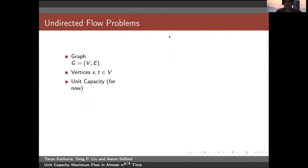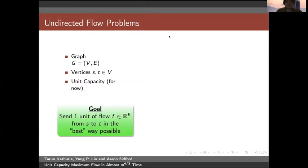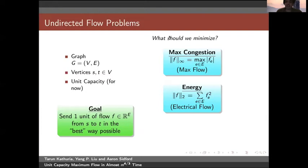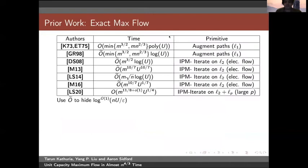To start, we consider undirected flow problems and assume unit capacity, so capital U equals 1 for now. Our goal is to send one unit of flow f from s to t in the best possible way. The characterization of best leads to different kinds of flow problems. If we minimize the L-infinity norm of the flow, we get max flow. If we minimize the L2 norm of f, we get electrical flow. And if we minimize the L1 norm, we get shortest path.